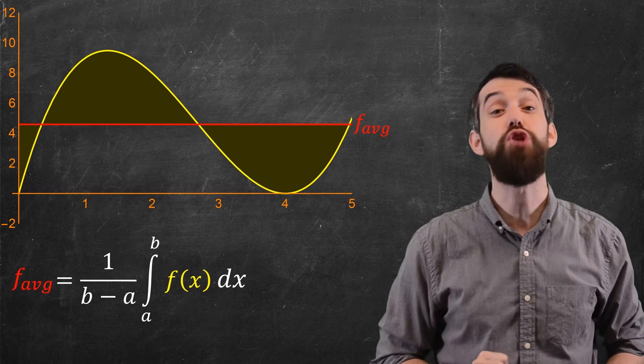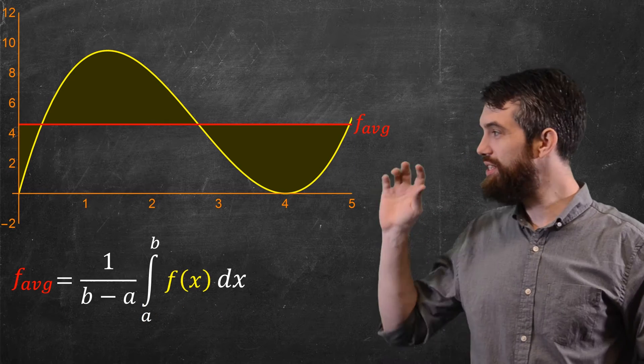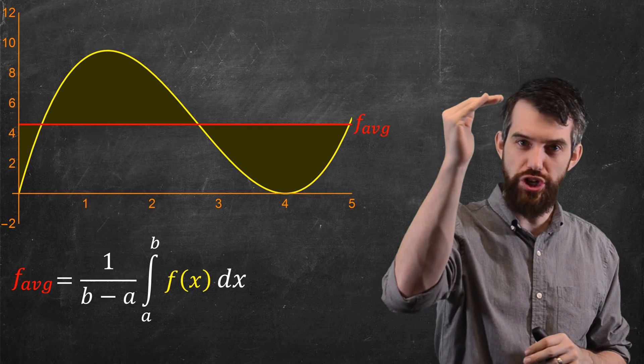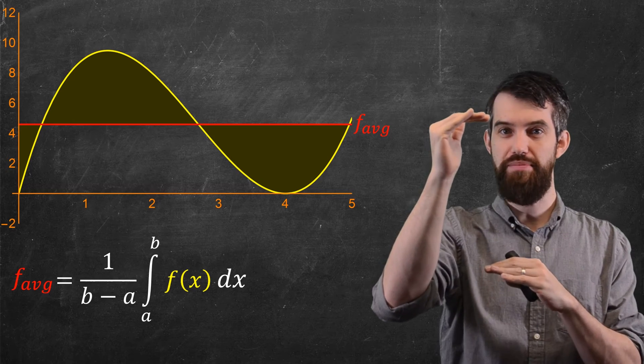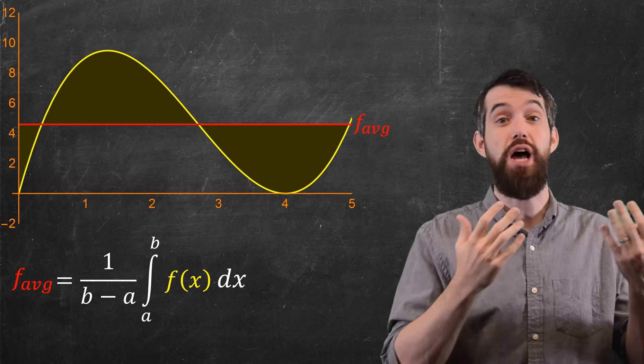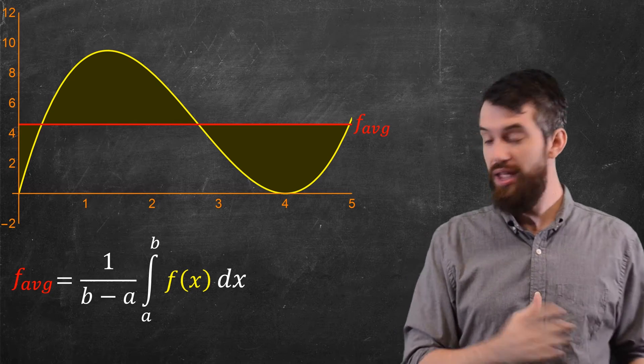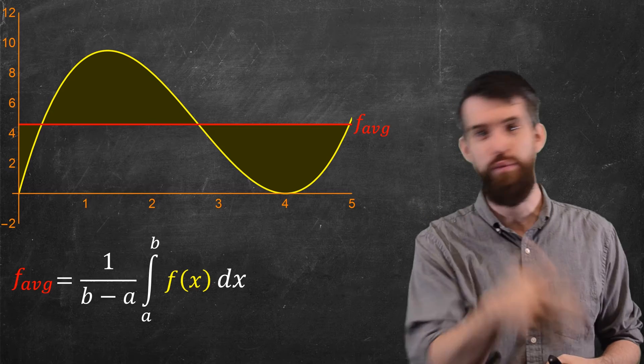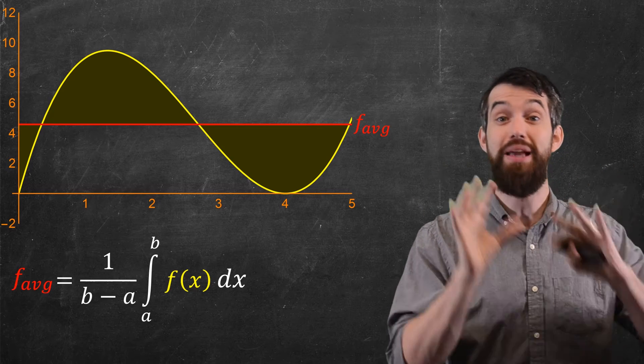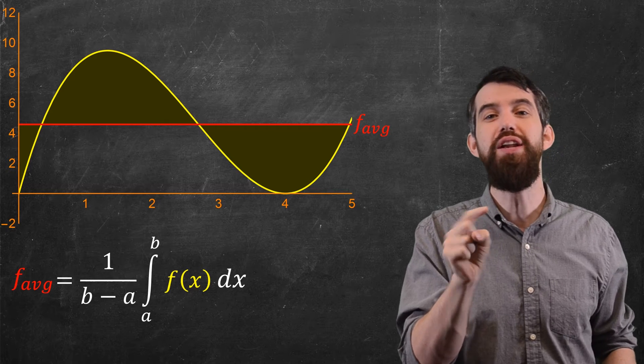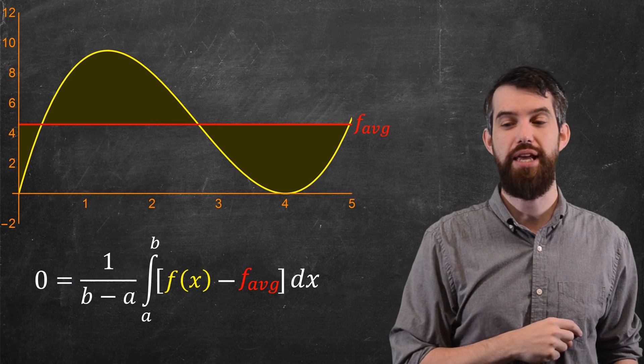One more interpretation for you. I've got the same f average horizontal line, but now I have shaded in the difference between the function and its average. And sometimes you get a region which is going to be above the f average line and sometimes below. Now, in my general formula, the f average is 1 over b minus a, the integral from a to b of f of x dx, my basic average value formula. I'm going to take that f av and I'm going to move it into the integral sign like this.